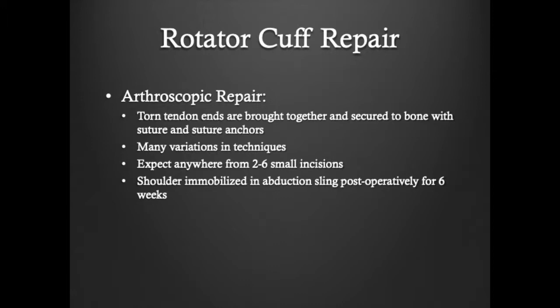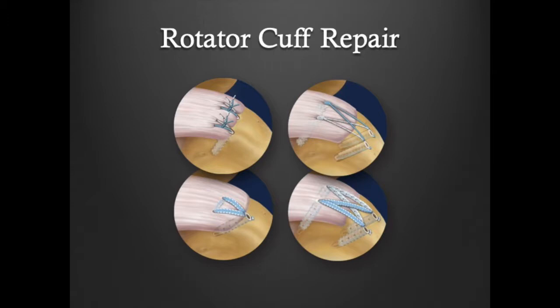A patient can expect anywhere from two to six small incisions. Following this, the shoulder is immobilized in a sling for six weeks. This slide demonstrates various types of rotator cuff repairs. I prefer an arthroscopic double row rotator cuff repair for restoration of rotator cuff anatomy, strength, and function.